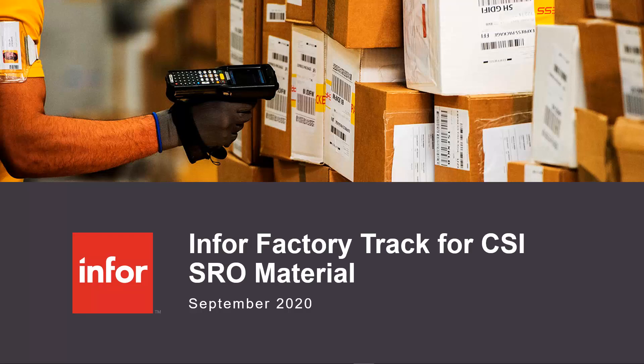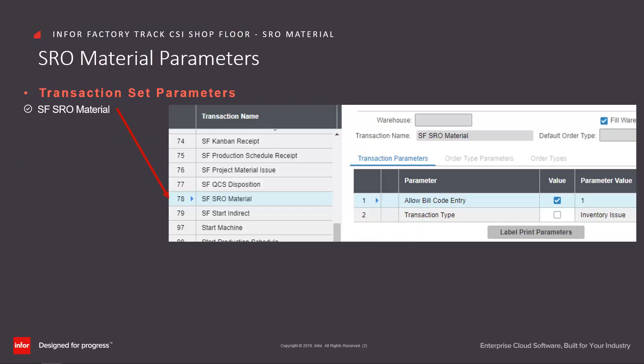Infor FactoryTrack for CSI SRO Material Handling. FactoryTrack has several SRO material parameters to control the validations, displayed fields, and processing options that are permitted as part of the SRO material process.